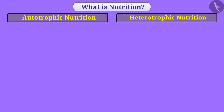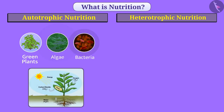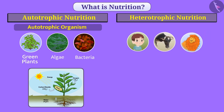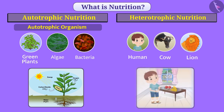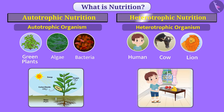In nature, there are many organisms such as green plants, algae, and some bacteria that make their own food. These are called autotrophic organisms and their mode of nutrition is called autotrophic nutrition. Other organisms such as humans, cows, and lions depend on other organisms for their food. These are called heterotrophic organisms and their mode of nutrition is called heterotrophic nutrition.